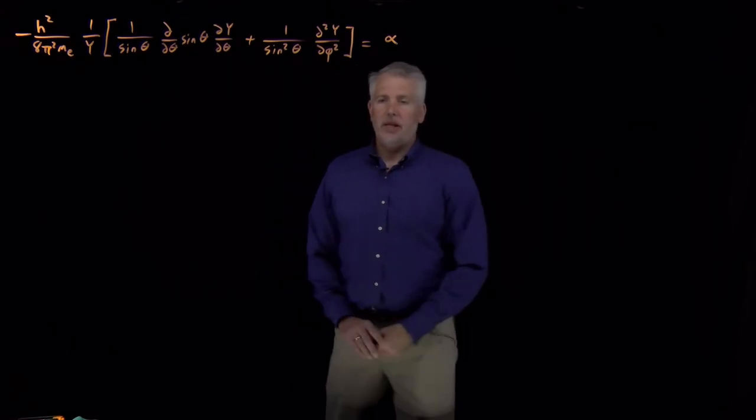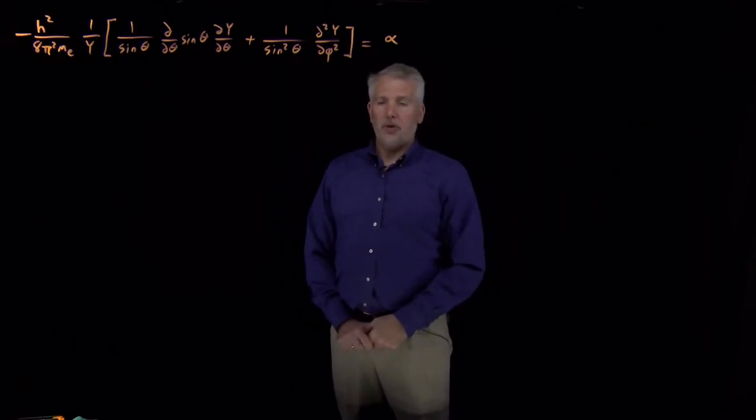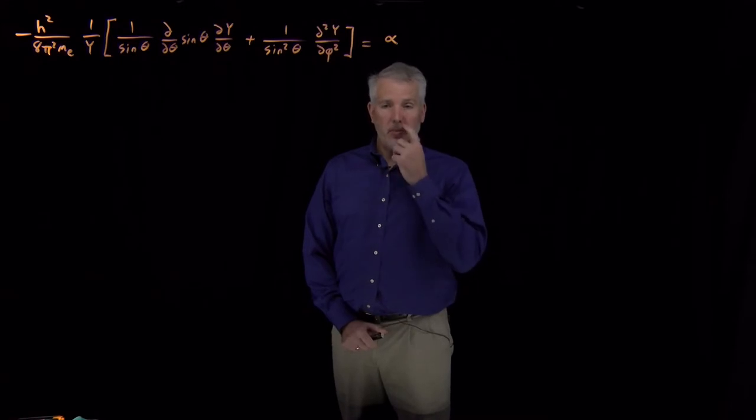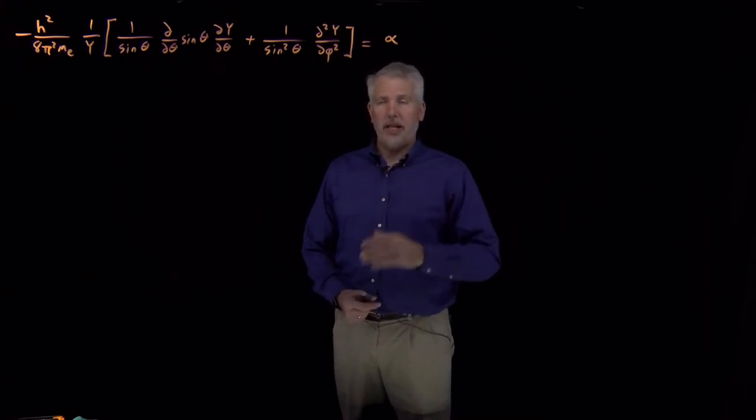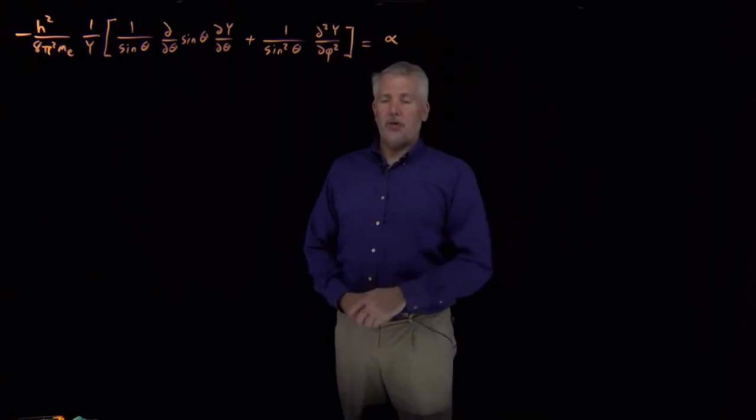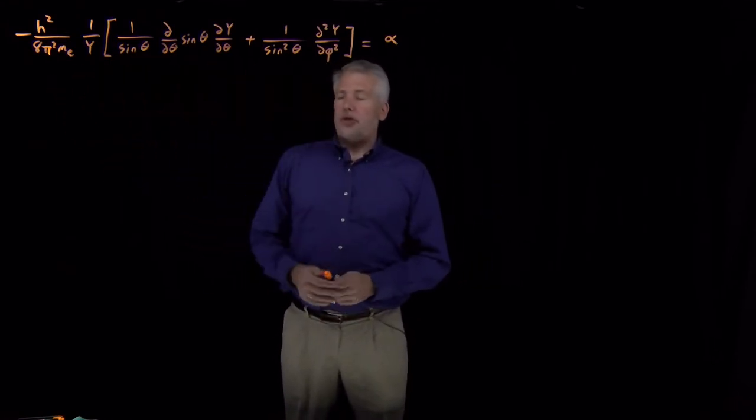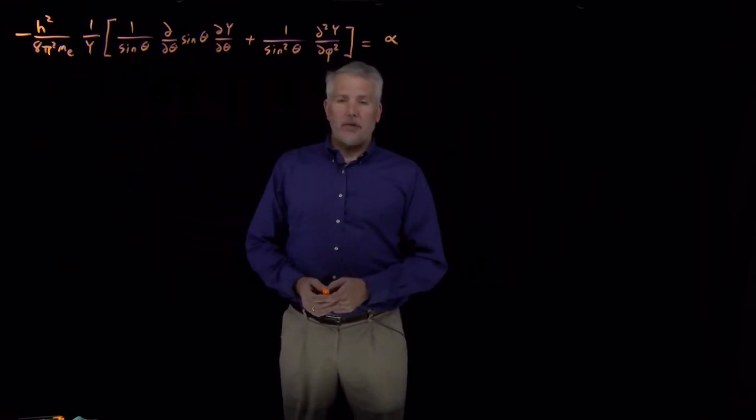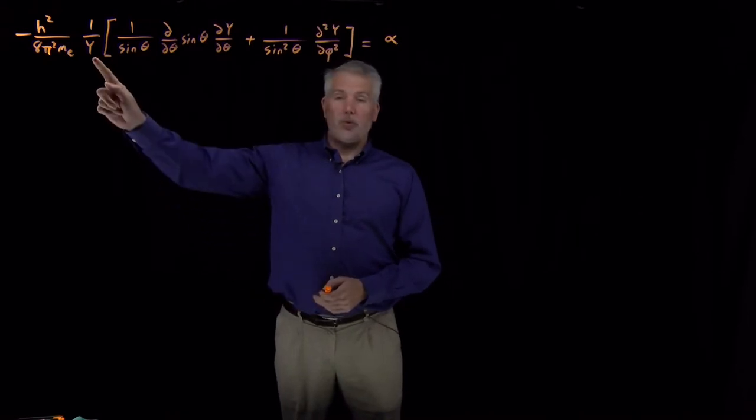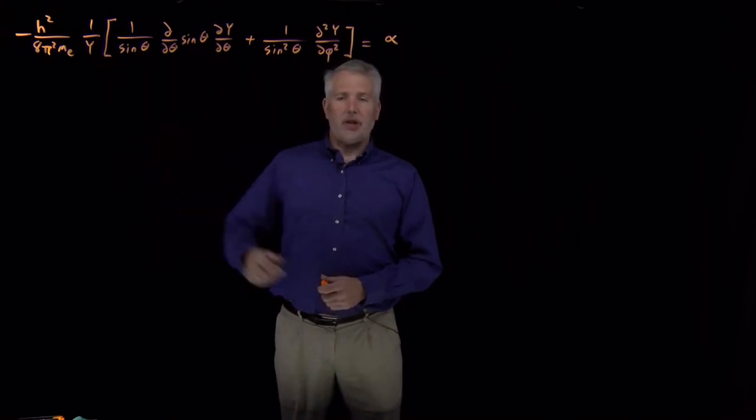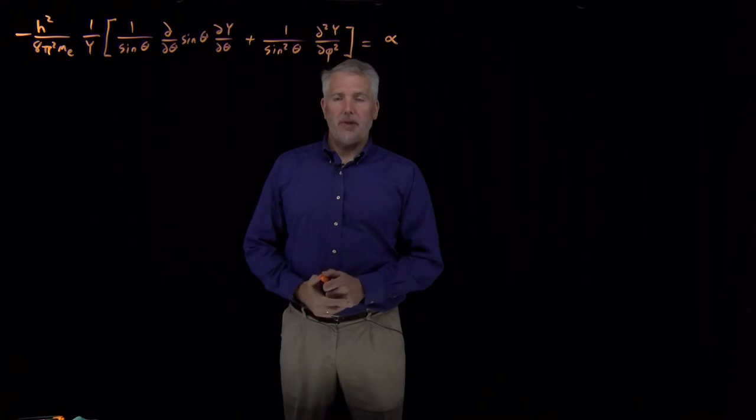Okay, so we have seen that the angular portion of the Schrödinger equation for the hydrogen atom, once we break it down into a radial piece and an angular piece, the angular piece of the Schrödinger equation looks like this. We're not solving for a wave function anymore, we're solving for Y, which is only the angular component of the hydrogen atom Schrödinger equation.